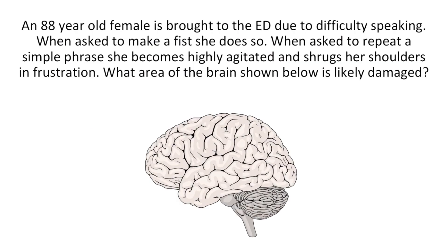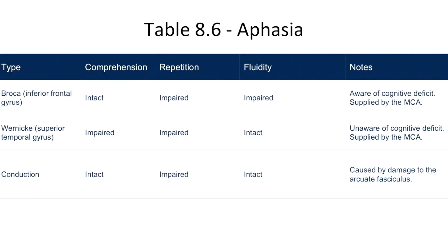An 88-year-old female is brought to the emergency department due to difficulty speaking. When asked to make a fist, she does so. When asked to repeat a simple phrase, she becomes highly agitated and shrugs her shoulders in frustration. The patient can comprehend language because she followed instructions, but can't speak well or repeat phrases. This presentation is consistent with Broca aphasia. Broca's area is located in the inferior frontal gyrus. From Table 8.6, Broca aphasia results in impaired repetition, impaired fluidity, and intact comprehension.